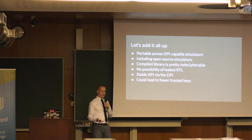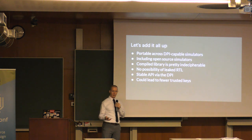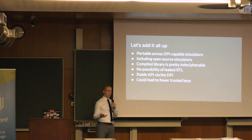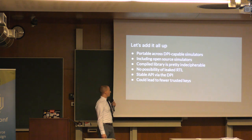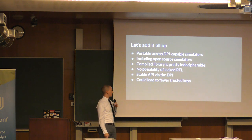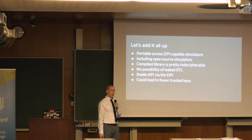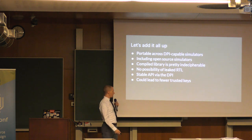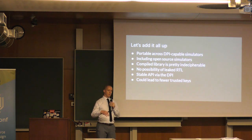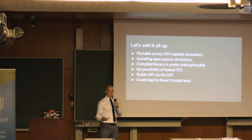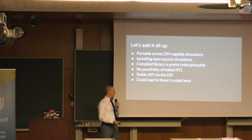If you've worked on Verilator and tried to decipher the Verilated C++, that's not a very fun thing to do, and trying to decipher the compiled Verilated C++ is really not something I'd wish on anyone. There's no possibility of leaked RTL because the RTL doesn't ship anymore, which is a strong plus. We don't really have issues about API breakages because all we're using is the DPI, which is part of the SystemVerilog spec. And ultimately, if people start adopting this, we can reduce the number of keys IP vendors have to use to ship their encrypted RTL, shrinking that circle of trust — which I would think would be a boon for them.